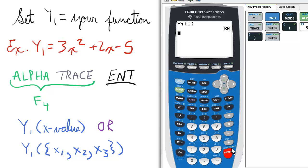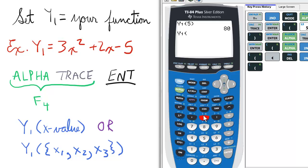Now if you want to do multiple values, you repeat the process. Press alpha trace for F4, enter for y1. Then open parentheses and open braces. Press 2nd and open parentheses for the open braces. Enter the values you like separated by a comma.